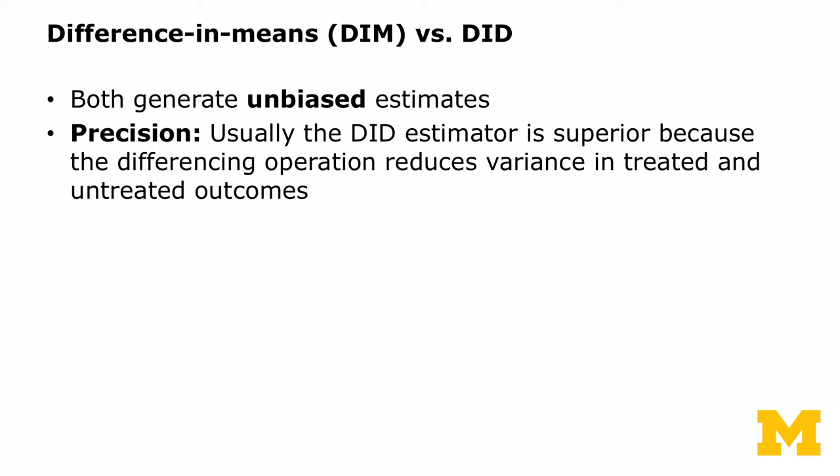Intuitively, when you do the post-intervention minus before-intervention for the same subject in the control or treatment condition, that takes away the individual fixed effects. That is one of the reasons why it reduces the variance in the treated and untreated outcomes.